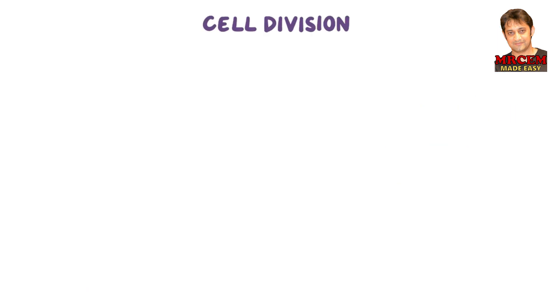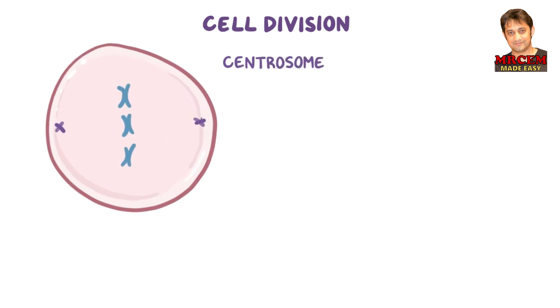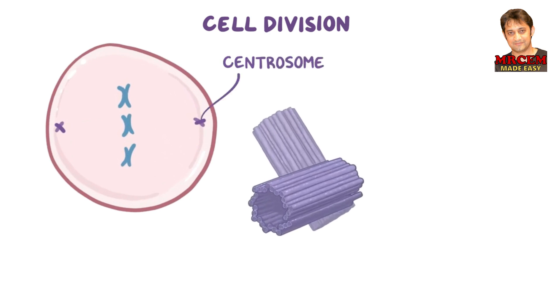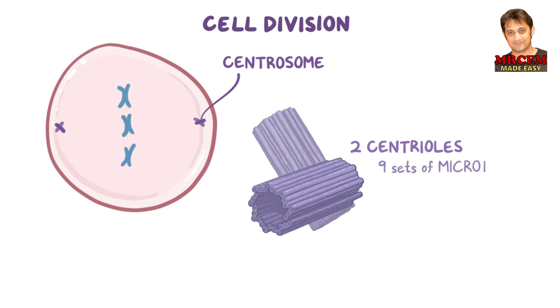Microtubules play a super important role in cell division. During cell division, there are two centrosomes inside the cell, and each centrosome is made out of two centrioles. Each centriole is in turn made up of nine sets of microtubule triplets.